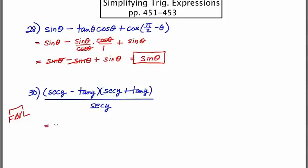So, the product of the first terms is secant squared Y. And the product of the second terms is minus tan squared Y. So, again, it was the product of the first terms, and then the product of the last terms. And all of this is going to be over secant Y.